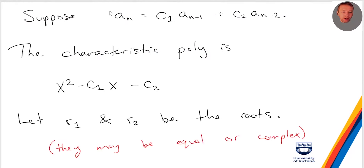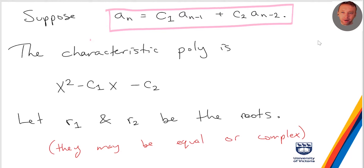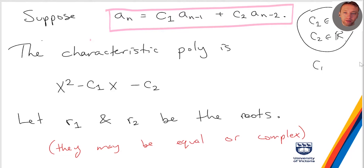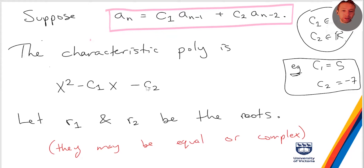Suppose I give you a homogeneous second-order linear recurrence relation, where c1 and c2 are just real numbers — you can think of c1 as 5 and c2 as something like negative 7. Remember what I told you last time: if you write down the characteristic polynomial x squared minus c1x minus c2, you get the roots, and those roots completely determine the general solution. That's what I want to prove to you.